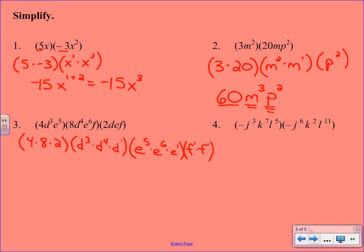4 times 8 times 2, we're going to end up with 64. When you add the powers on the d, we have d to the eighth. Again, adding the powers on the e, we have e to the twelfth. And f to the second. Hopefully you came up with that same answer on your own.